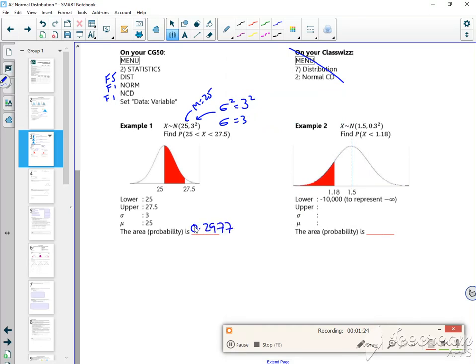There's another example here for less than 1.18. So this one was fine because it was contained with finite numbers. But this one, it's going from 1.18 and it's going that way. So I need to choose a suitable lower value that would be representative of minus infinity. So I'm going to use minus 10,000. And my upper will be 1.18. And then sigma is 0.3, because I know that sigma squared is 0.3 squared. So sigma is 0.3. And mu is 1.5.